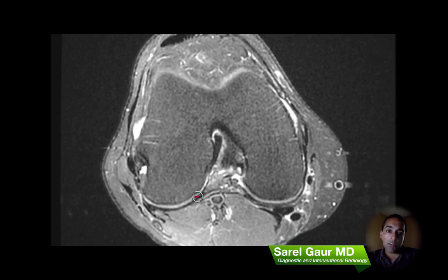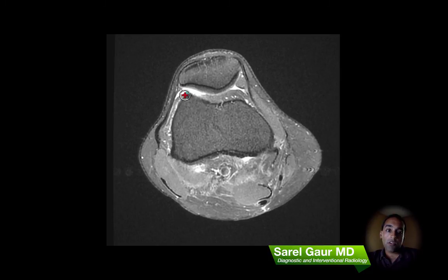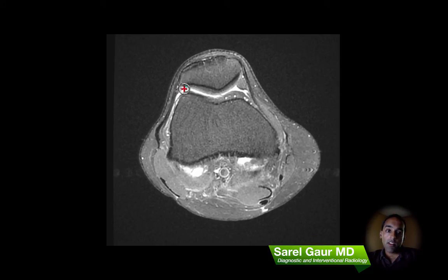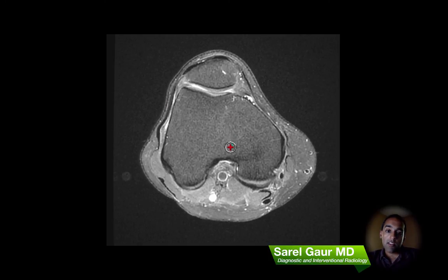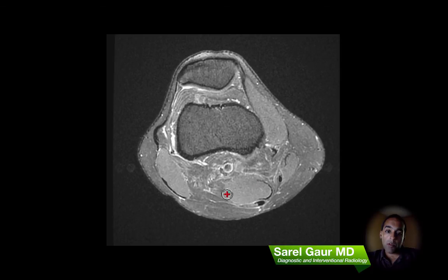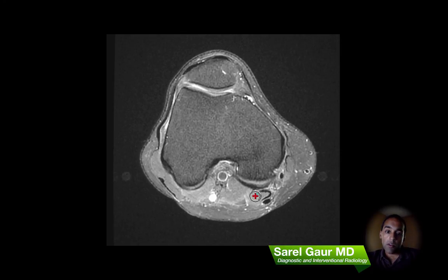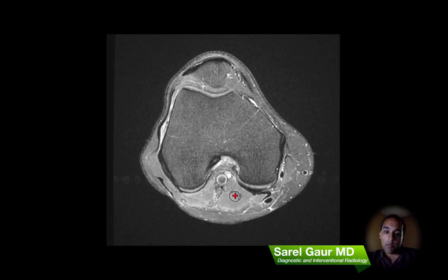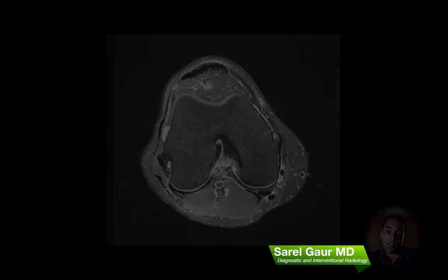So pretty much almost done. The last couple things I look at before closing off the case: I look for intra-articular fluid and try to rule out a joint effusion. Here you can see a normal amount of intra-articular fluid as this high signal here. I also like to look for a Baker's cyst, so I basically find the semimembranosus muscle right here, trace that down into where it comes into contact with the medial head of the gastrocnemius, which is here. A Baker's cyst basically originates right there, and the patient does not have one.